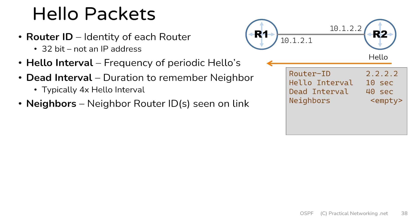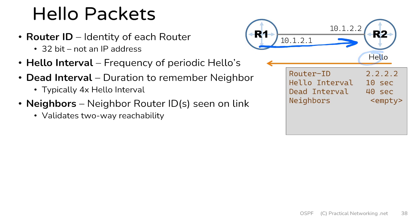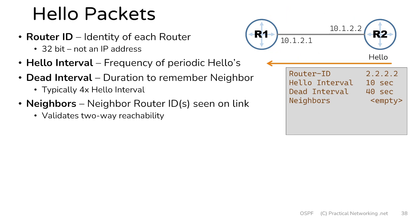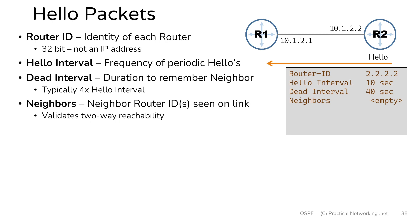The purpose that this serves is to verify two-way reachability on the link. When router 1 receives hello packets from router 2, those hello packets from router 1 are going to include router 2's router ID in the neighbors field. If router 2 receives that hello packet, this proves to router 2 that router 1 received the initial hello packet and was able to send a hello packet back, proving two-way reachability on this link. Keep in mind that the neighbors field includes all the router IDs seen on this particular link.